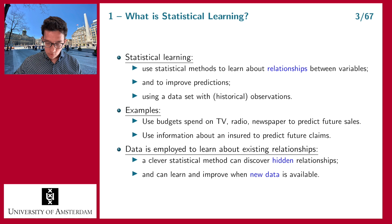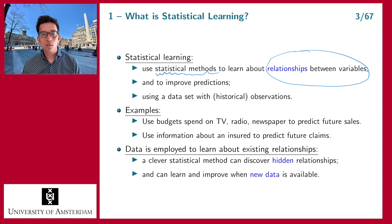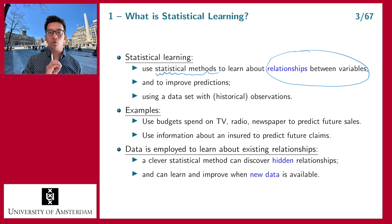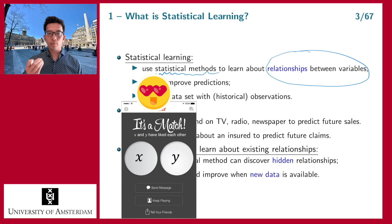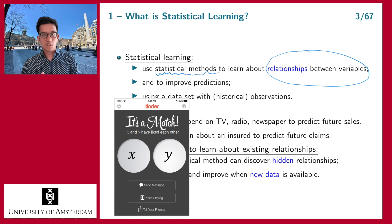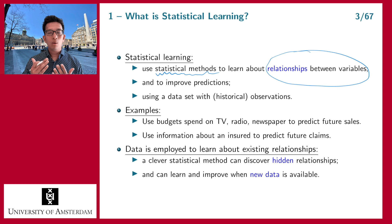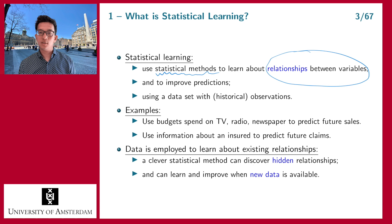When we use a certain statistical method, that method can help us detect possible relationships that exist between the variables in your data set. For example, assume you have a data set with two variables, X and Y. You want to know: is there a relationship between X on one hand and Y on the other? Assume that Y is something you want to predict — for example, the sales over the next year.